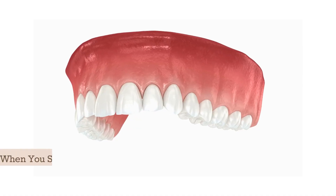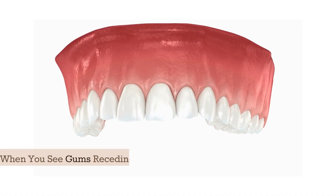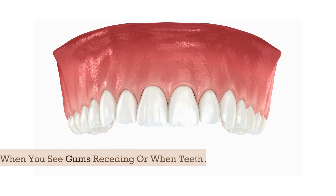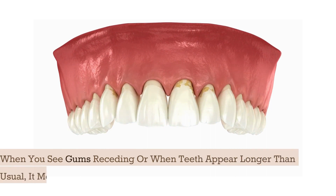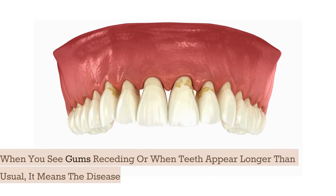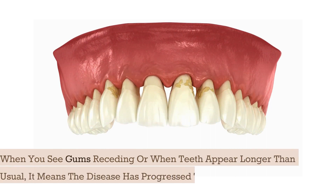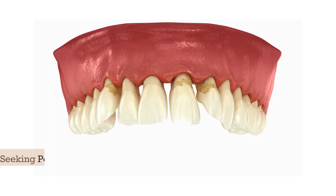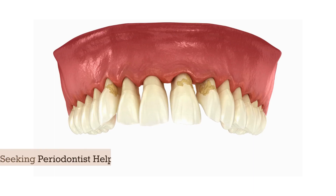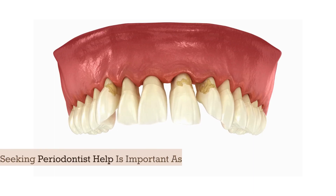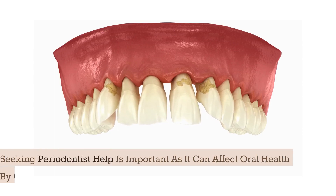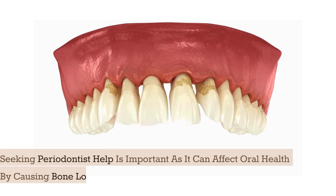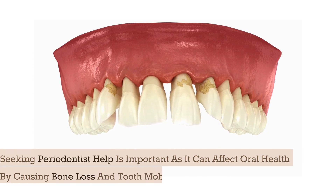When you see gums receding, or when teeth appear longer than usual, it means the disease has progressed to the next stage. Seeking periodontist help is important, as it can affect oral health by causing bone loss and tooth mobility.